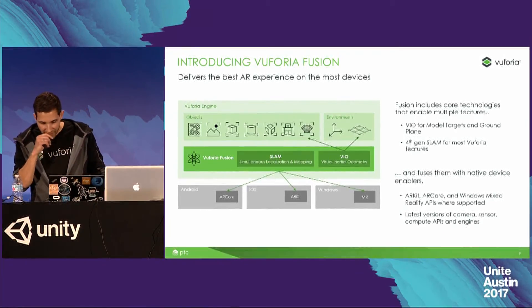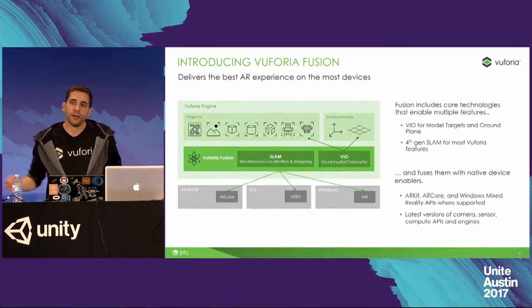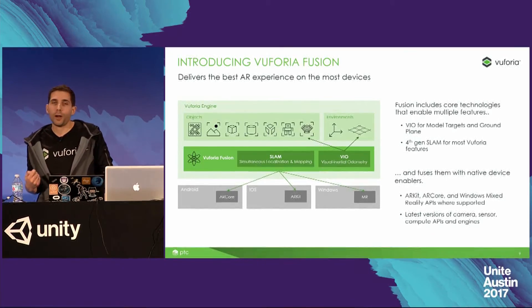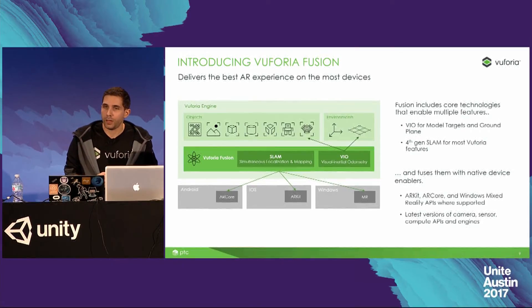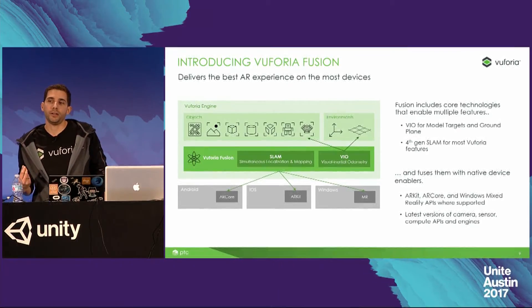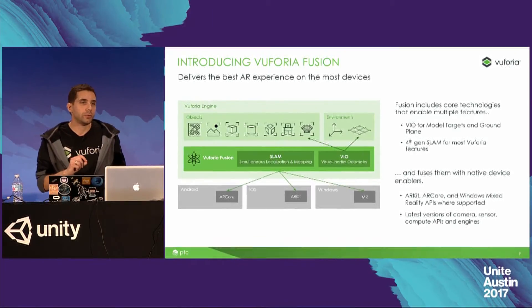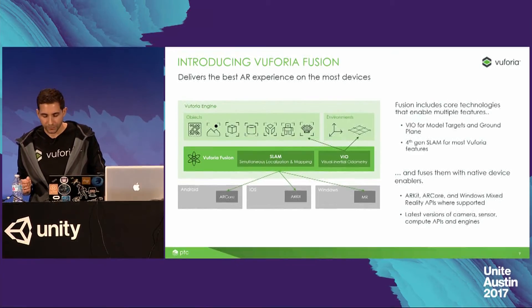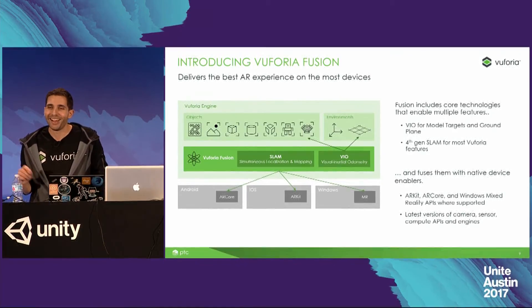What that really means in practicality is that you create an environment-based game, and one of your players downloads it on the brand new iPhone X. When they run it, we're going to use ARKit — it's there, it's powerful, it's awesome, we're going to use it. But if another player downloads it on an iPhone 6, where ARKit is not enabled on those A8 chips, we will use our own ground plane technology based on VIO to deliver the same sort of experience on those phones. Similarly, if somebody downloads it on the brand new Pixel 2, we leverage ARCore.